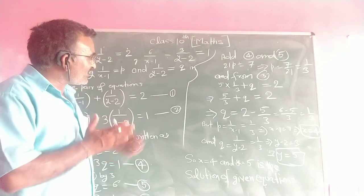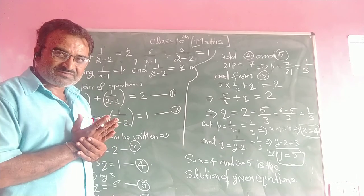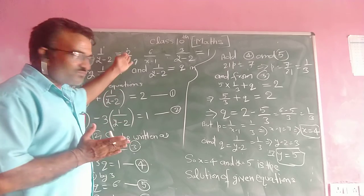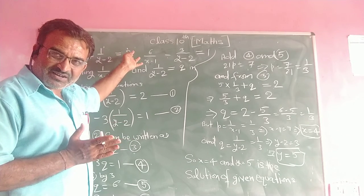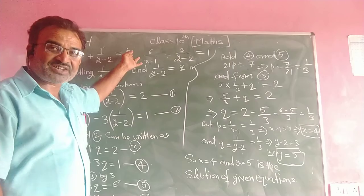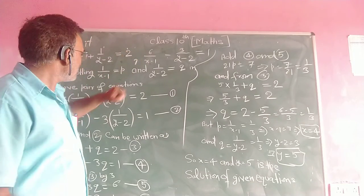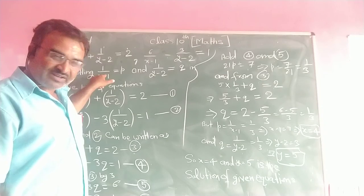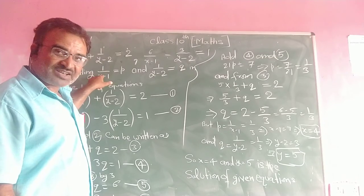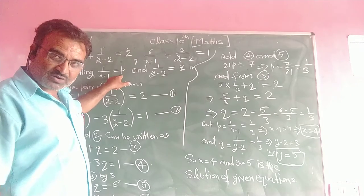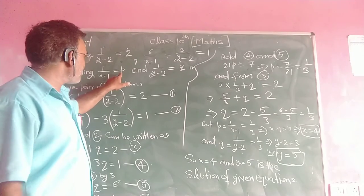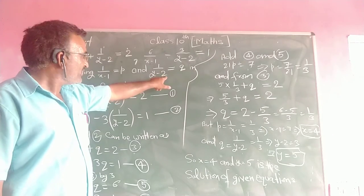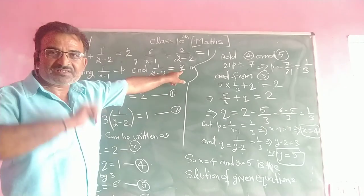So, we have to form linear equations by reducing these equations into a pair of linear equations in two variables. We suppose that 1 upon (x minus 1) is equal to single variable p, and 1 upon (y minus 2) is equal to single variable q.